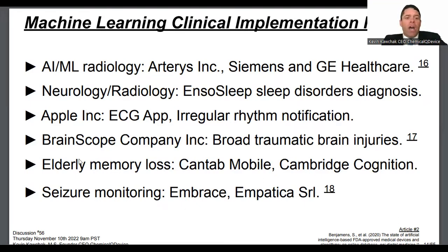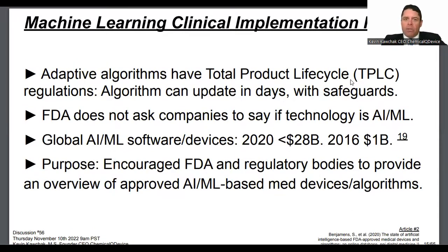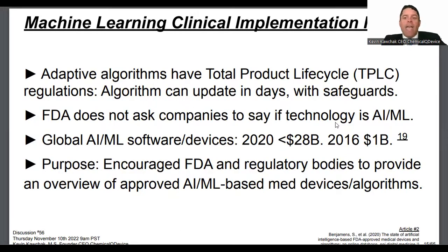The term 'total product lifecycle' or TPLC applies to algorithms on the learning side — not locked. You can update within a short period of time, and safeguards are in place to address patient concerns if something goes wrong. The FDA does not require companies to say if the technology is AI or ML, which is why only 45% have chosen to list AI/ML in their FDA registration.